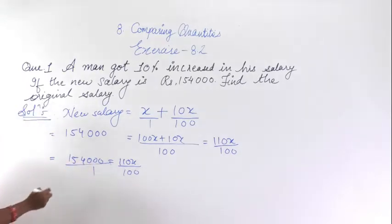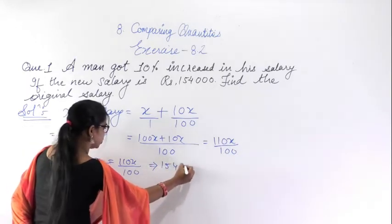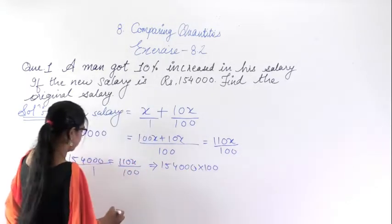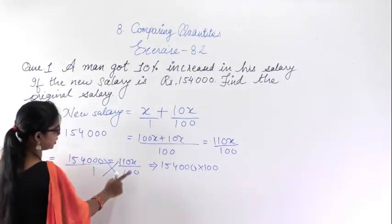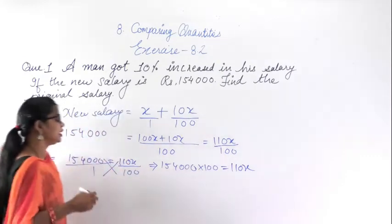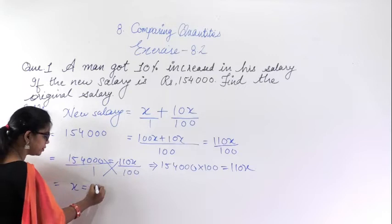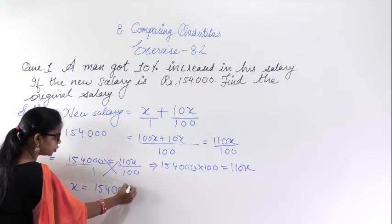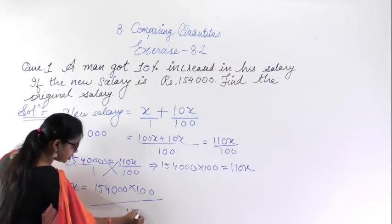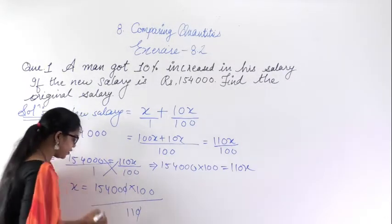Now you can cross multiply this. On cross multiplying, you get 1,54,000 into 100 on one side. And on the other side, 1 into 110X, which gives 110X. So now what you have to do is find the value of X.